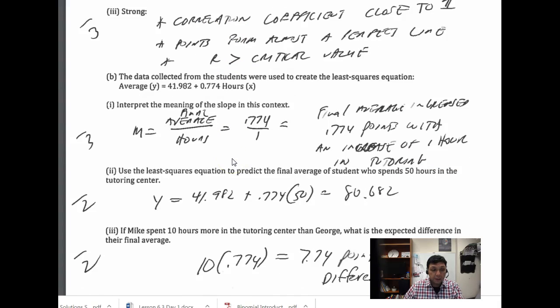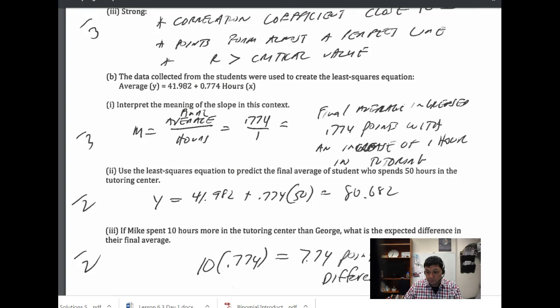And then using this equation here, your average is equal to this value, which is the y-intercept, plus the slope times the number of hours you're in the study center. So what does the slope mean, this 0.774? The final average increases 0.774, that's the y variable, when you increase your study time by one hour. So when you increase your study time, your average goes up by 0.774 points.